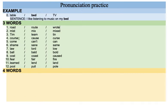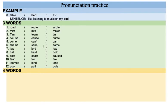Number four: cause, cause, curse. I repeat: cause, cause, curse. Number five: come, can, can. I repeat: come, can, can. Number six: shame, sane, same. Be careful with the N — sane, same.